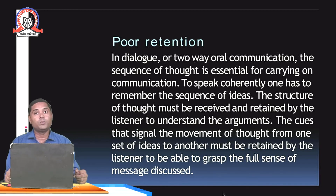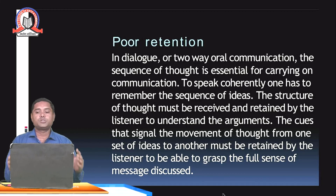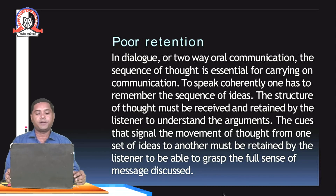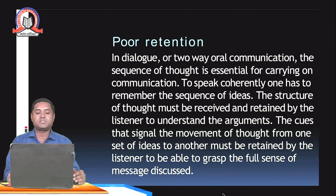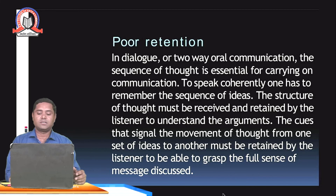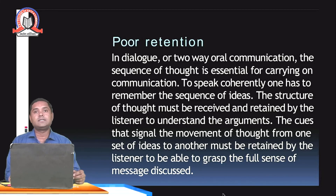Another barrier is poor retention in dialogue or two-way oral communication. The sequence of thought is essential for carrying on communication. To speak coherently, one has to remember the sequence of ideas. The structure of thought must be received and retained by the listener to understand the arguments, and cues signaling the movement of thought from one set of ideas to another must be retained. Because of poor retention, we listen to one idea, then another, and forget the previous one — so we cannot understand the message clearly.